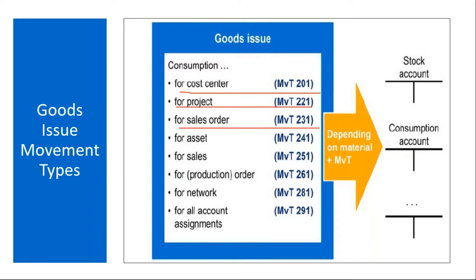Goods issue for a sales order, and goods issue for a production order is movement type 261 — this is used in PP (Production Planning). So we have these types of goods issues with their various movement types.